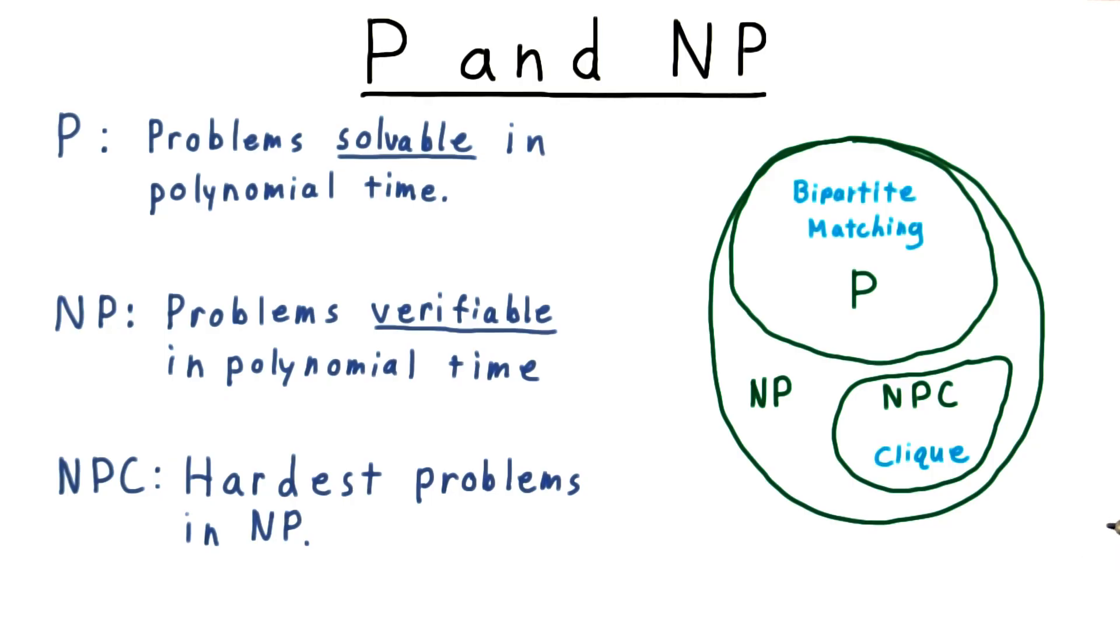To computer science novices, the difference between matching and clique might not seem to be a big deal, and it's surprising that one is so much harder than the other. In fact, the difference between a polynomial solvable algorithm and an NP-complete one can be very subtle. Being able to tell the difference is an important skill for anyone who will be designing algorithms for the real world.